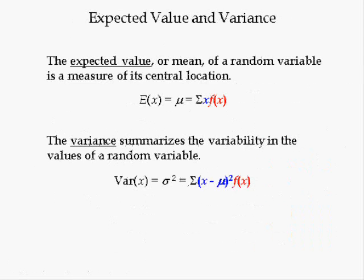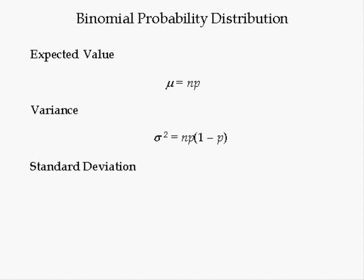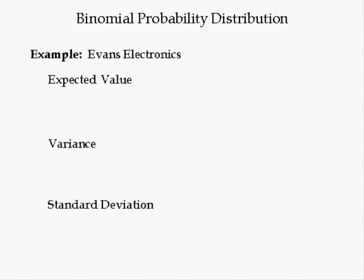To compute the expected value and variance of a binomial probability distribution, we can use the following shortcut equations. The expected value mu equals the number of trials times the probability of success. The variance equals n times P times 1 minus P. The standard deviation is just the positive square root of the variance. In the Evans Electronics example, n equals 3 and P equals 0.1. Hence, the expected value is 3 times 0.1, which is 0.3.